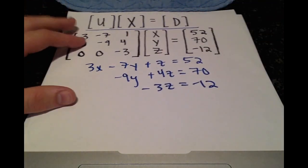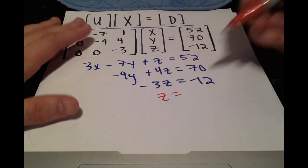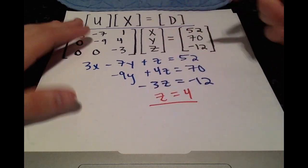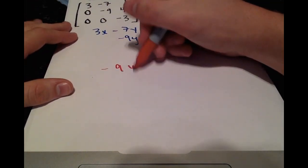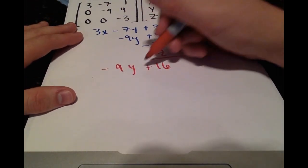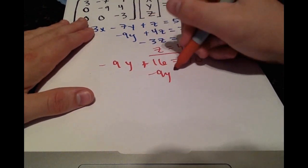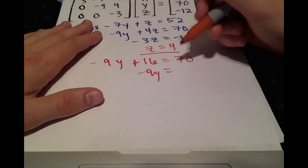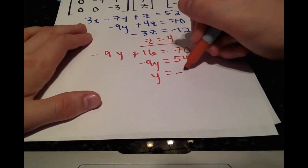So we'll repeat the same process. We see we can get z pretty easily. That's just 4. Plugging that into the equation above, we have negative 9y plus 16 is equal to 70. Or negative 9y is equal to 54. So y must be equal to negative 6.